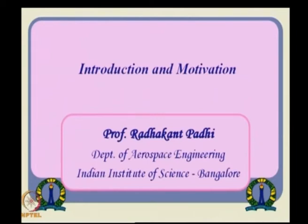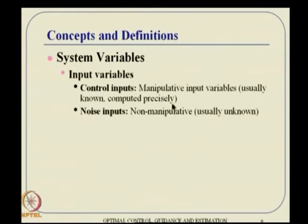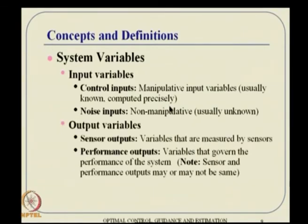Let us go to some introduction and motivation. The first very basic concept is the system variable. When we talk about variables, they can be largely classified as input variables, output variables, and state variables. Input can be like control input — a manipulative set of variables that we can vary as we wish and compute precisely.